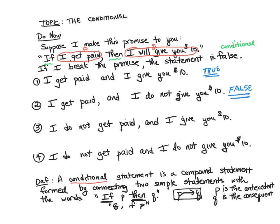Now let's look at the other two, where we can debate. I do not get paid, and I give you $10. Would you be upset with me? I didn't get paid but I gave you the $10 anyway. I think you'd be happy. I went over and beyond my promise — I didn't get paid but I decided to give you the $10 anyway. So this is true; my promise isn't broken.